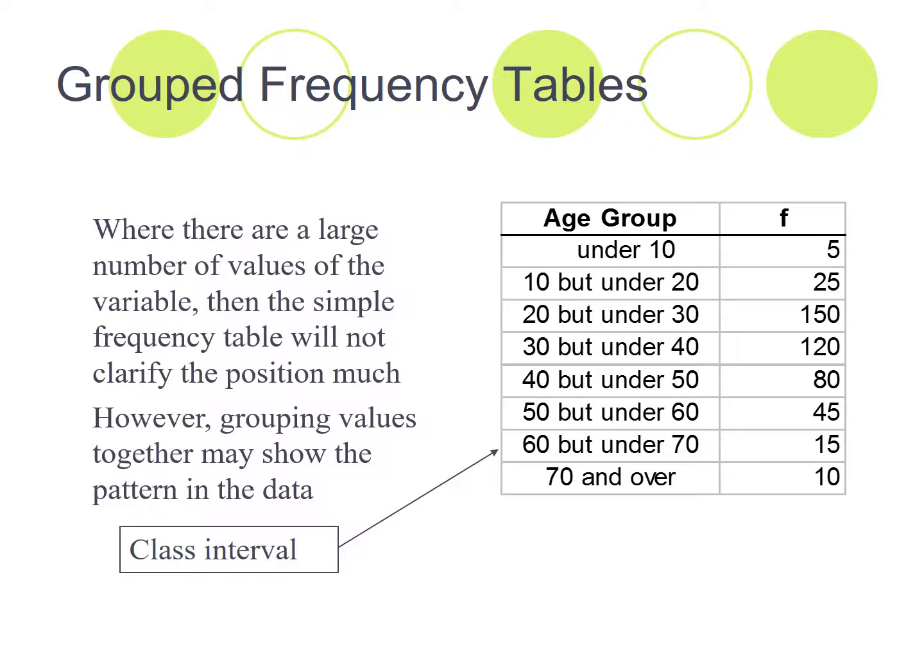So in this case here, we've got an age group over here. So under 10 and there were five people in that category, between 10 and under 20 is 25, and the whole way up. And 70 and over, there were 10 people here. And this is called a class interval here.